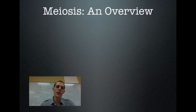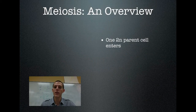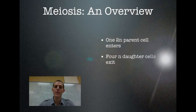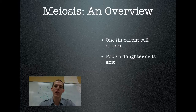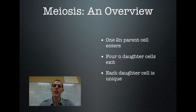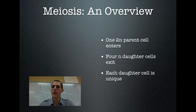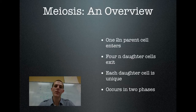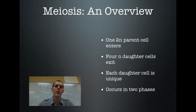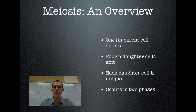Let's look at a very quick overview, and then we'll talk about the steps individually. One 2N parent cell enters — one diploid parent cell enters the process. Four N daughter cells exit. So you've got one diploid cell going in, four haploid cells coming out. Each daughter cell is unique from the others and from the parent, so none of the cells that come out of meiosis are like the others. And it occurs in two phases, unlike mitosis which happens in one phase. But you will notice there are some striking similarities — they look almost identical, and a lot of the terminology is similar between the two.